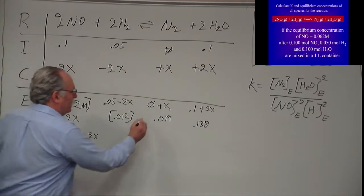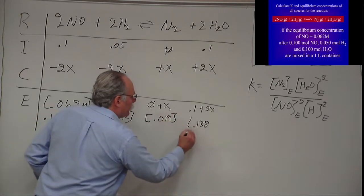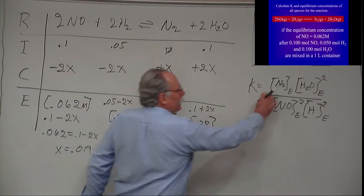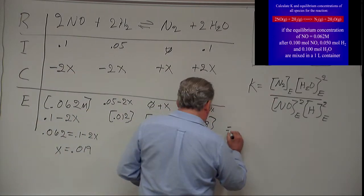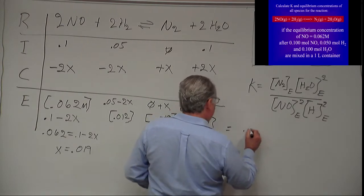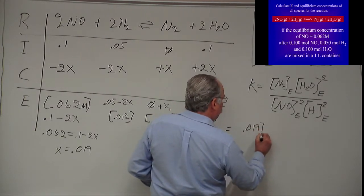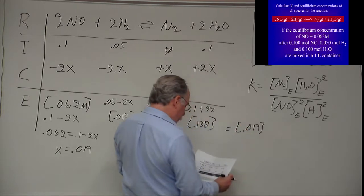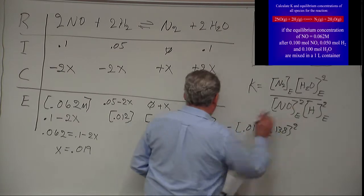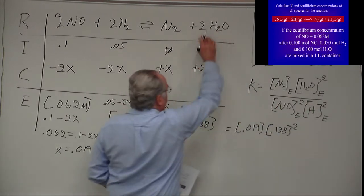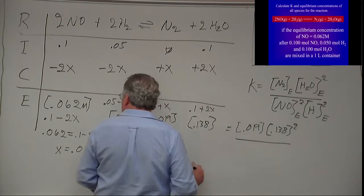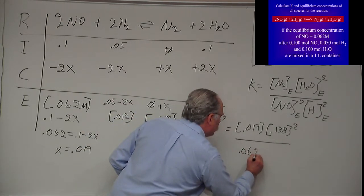Now I take these values which are my equilibrium values and plug it into here. So I have 0.019, 0.019 for my nitrogen, I have 0.138 squared for my water at equilibrium, divided by 0.062 squared.